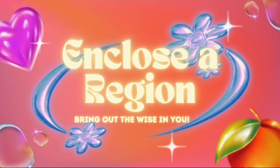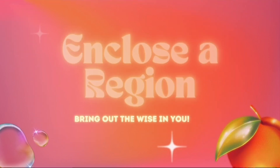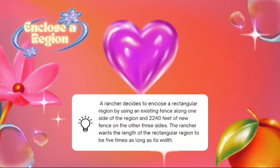Let's start with the first problem entitled 'Enclose the Region.' The given problem is: a rancher decides to enclose a rectangular region by using an existing fence along one side of the region and 2,240 feet of new fence on the other three sides.